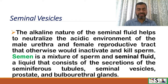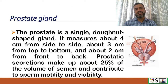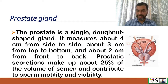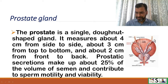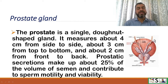Semen consists of secretions from the seminiferous tubules, seminal vesicles, prostate, and bulbourethral glands. The prostate is a single donut-shaped gland measuring about 4 cm side to side, 3 cm top to bottom, and 2 cm front to back. Prostatic secretions make up about 25% of the volume of semen and contribute to sperm motility and viability.